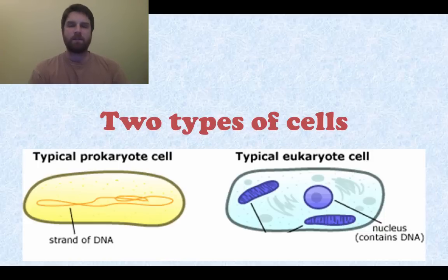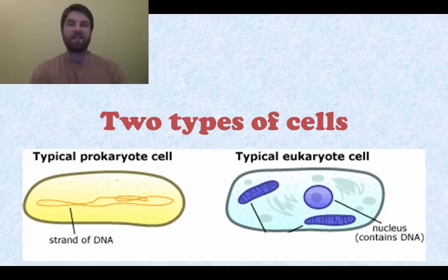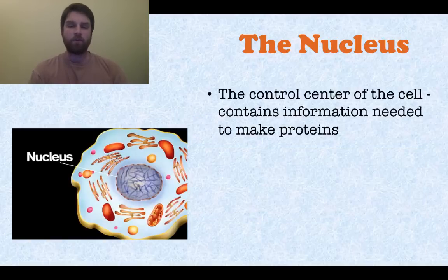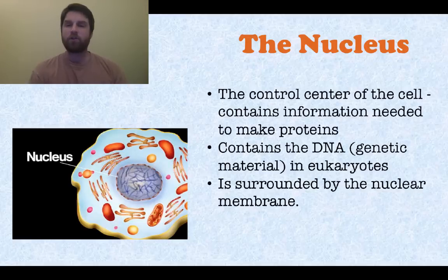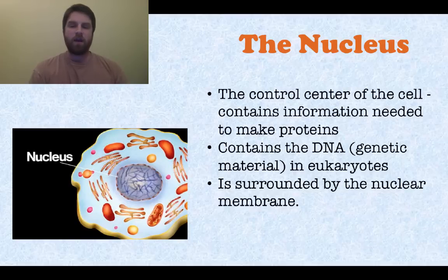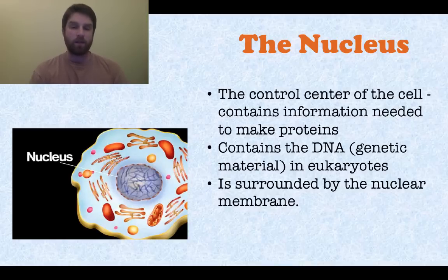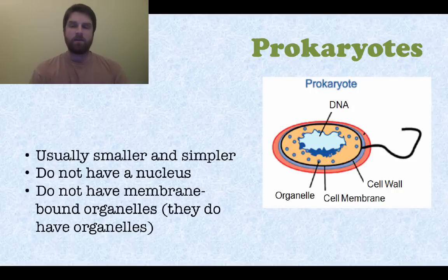Two main types of cells we're going to look at are prokaryotic cells and eukaryotic cells. Let's look at them in a bit more detail. It's all about the nucleus here. The nucleus is the control center of the cell and it contains all of the information needed to make proteins — so the DNA is in the cell's nucleus. In eukaryotes, the nucleus is surrounded by a nuclear membrane, but in eukaryotes only.